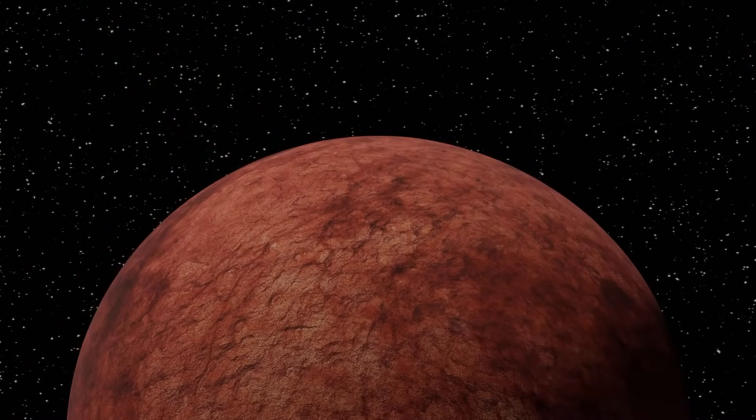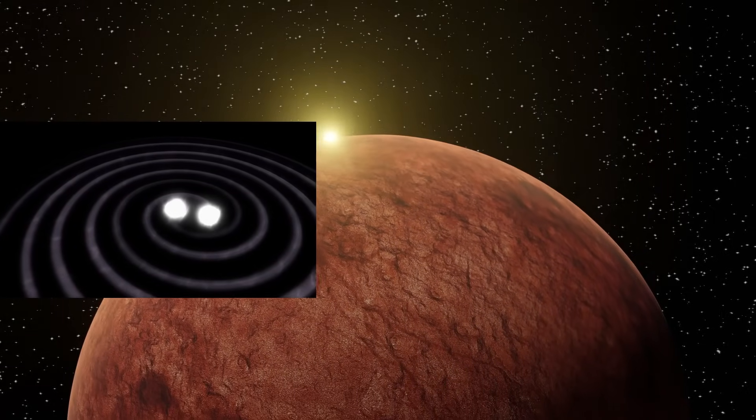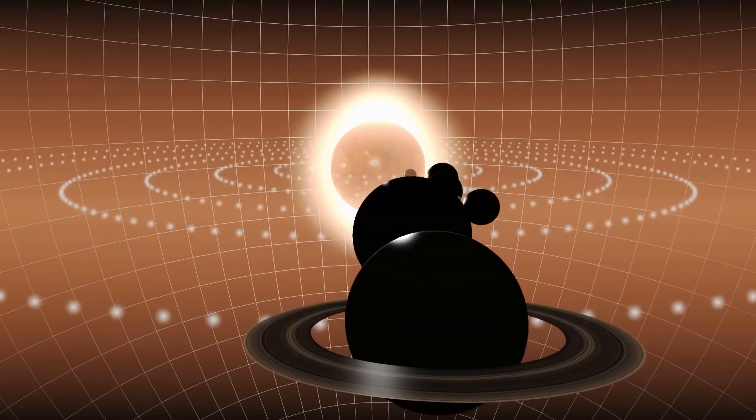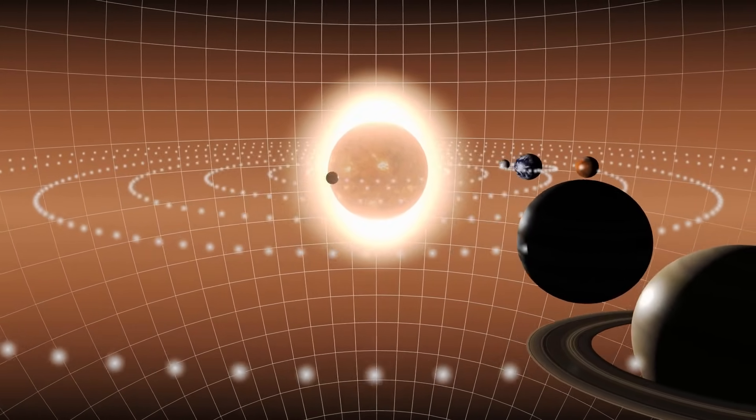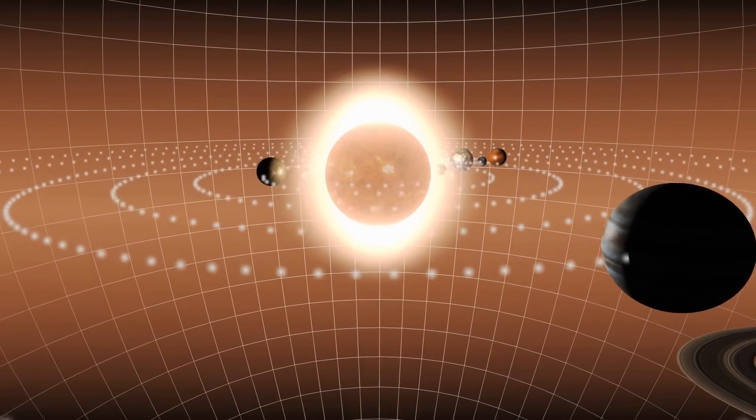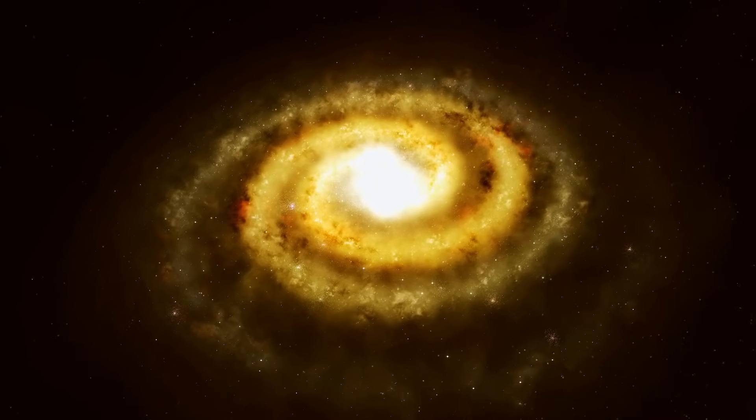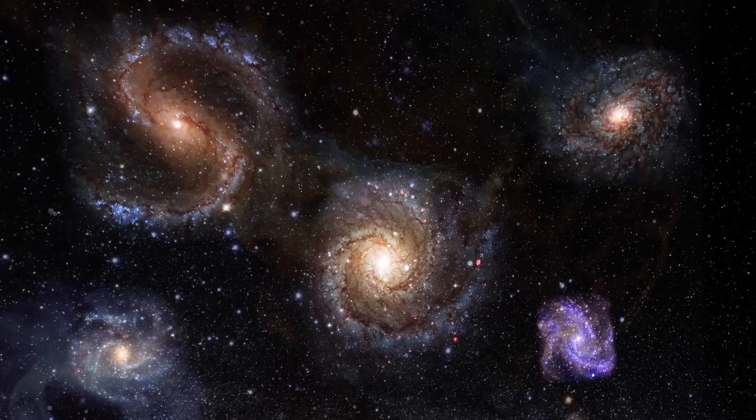They might help physicists connect the rules that govern very big things, general relativity, and very small things, quantum mechanics. Finding galaxies in the early universe and the possibility of finding cosmic strings are both big steps forward in our quest to understand our place in the universe. They make us think about not only how big the universe is, but also how complicated it is and how many options it has.